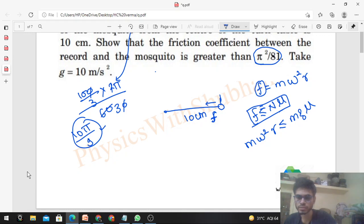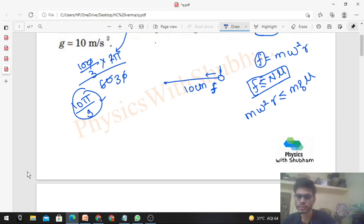You can check here: m cancels, and μ is greater than or equal to omega squared r by g. So omega squared is 100π²/81.